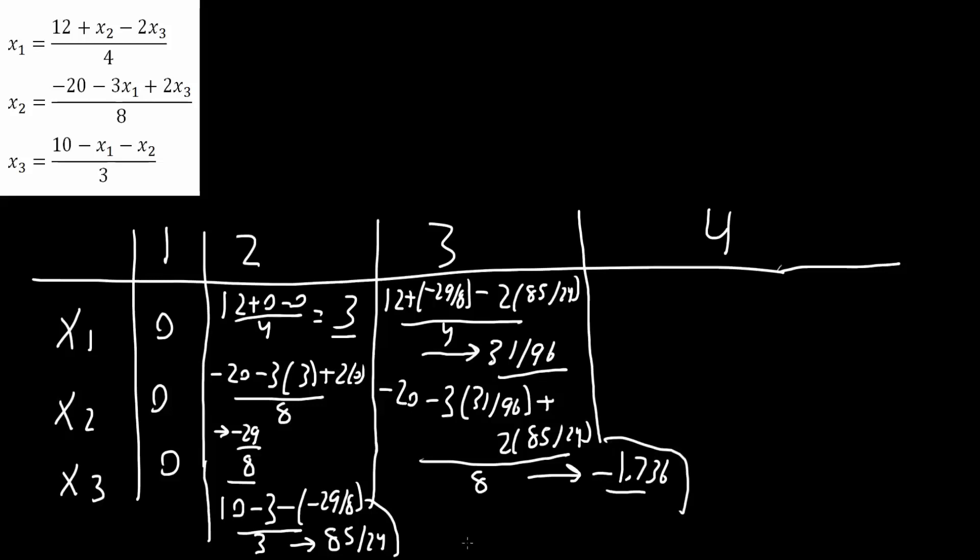And finally we will do x3. So we now know x1 is 31 over 96, x2 is negative 1.736, and we plug it in here. So 10 minus x1 was 31 over 96, minus parentheses minus 1.736, divided by 3, and we would get 3.804. And finally we will do the third iteration.